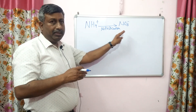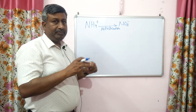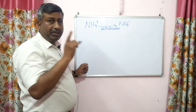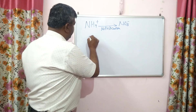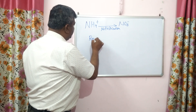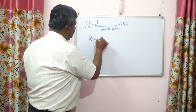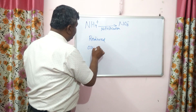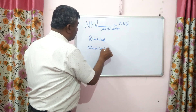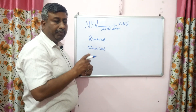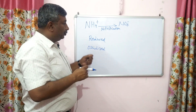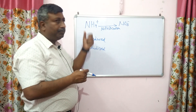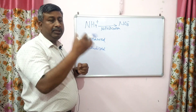So two forms exist in soil: ammonium and nitrate. On the other hand, there are two conditions in soil — reduced condition and oxidized condition. These conditions are very important and are responsible for the conversion of ammonium to nitrate and other processes.